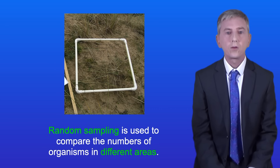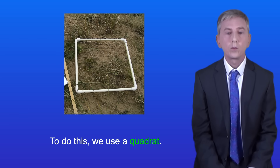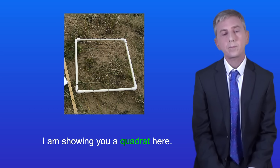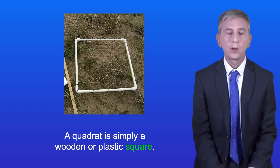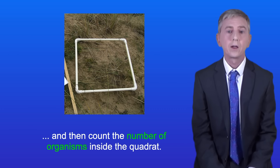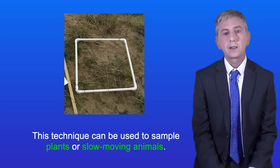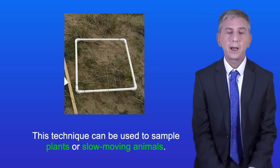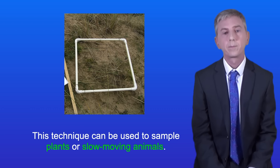Random sampling is used to compare the numbers of organisms in different areas. To do this we use a quadrat — I'm showing you a quadrat here. A quadrat is simply a wooden or plastic square. To use a quadrat we place it on the ground and then count the number of organisms inside it. This technique can be used to sample plants or slow-moving animals.